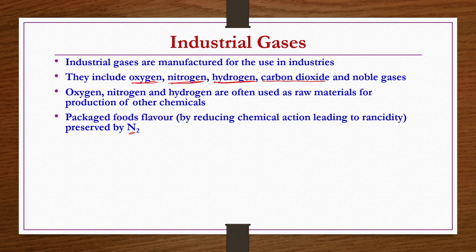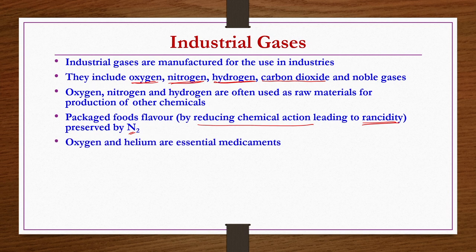How does nitrogen preserve the flavor of packaged food? By reducing the chemical action occurring on the food over the time of storage. If there is chemical action it may lead to rancidity, which is not good from the packaged food point of view. So nitrogen is also used for the preservation of food items. Oxygen and helium are essential medicaments.